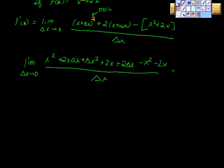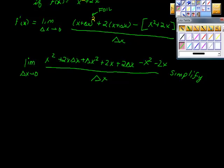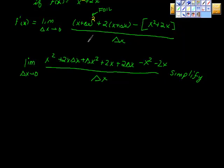Now we're going to simplify. If you look right here, I think a lot of this stuff cancels out. We have a positive x² here and a negative x² here, and we have a 2x here and a negative 2x here. That cancels out, doesn't it?